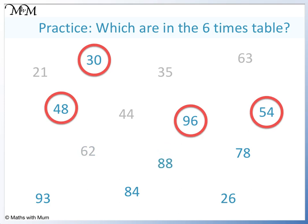88 is even, but 8 plus 8 equals 16, which is not in the 3 times table. 78 is even. 7 plus 8 equals 15, a multiple of 3, so 78 is a multiple of 6. 93 is odd, so it is not in the 6 times table.